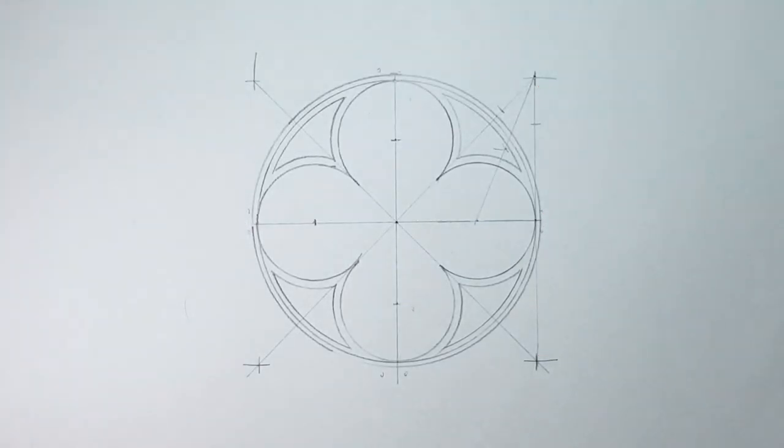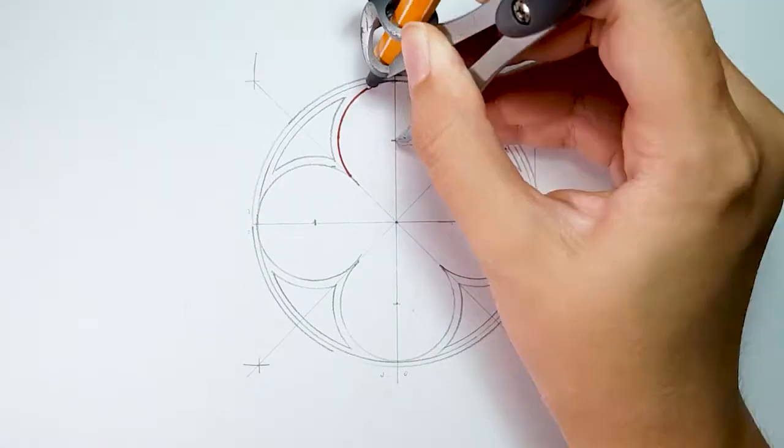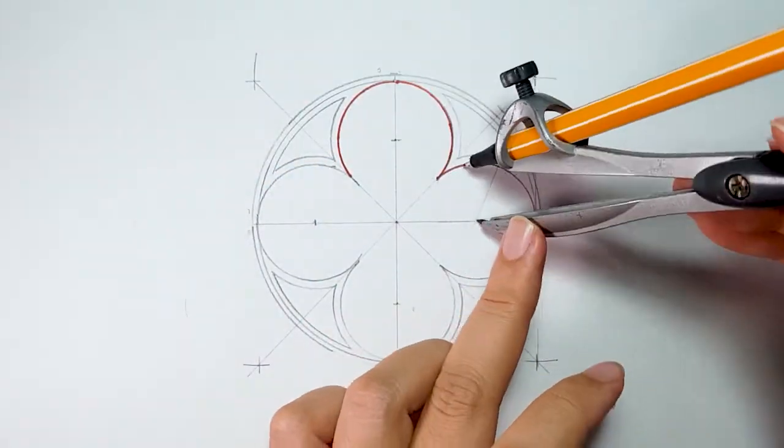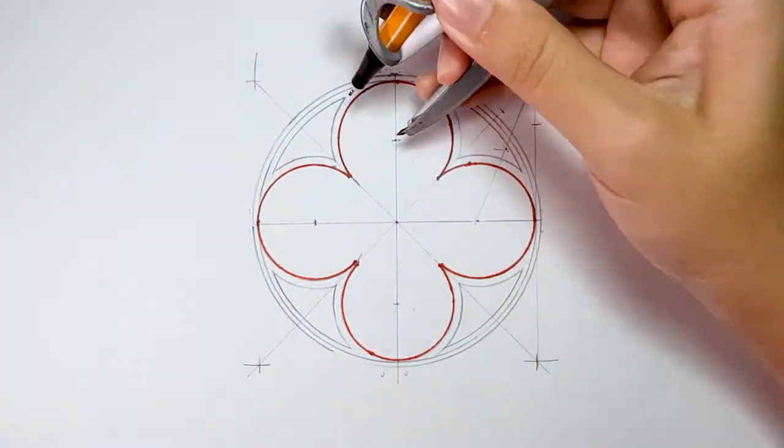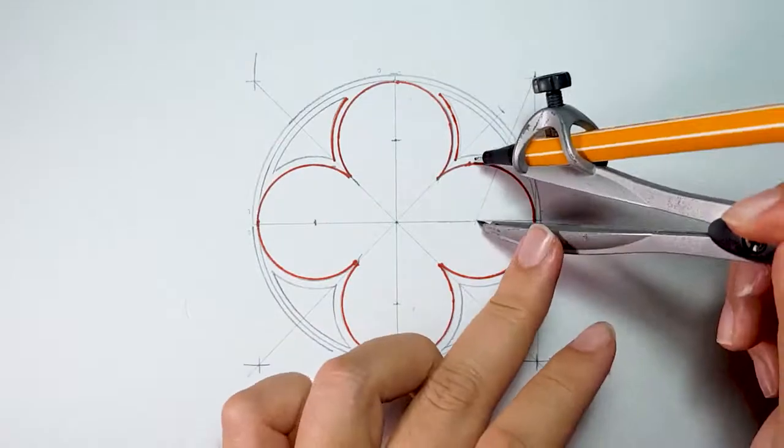The basic guideline of quatrefoil is finished. Now, use your pen with the compass to draw outlines based on the pencil drawing as shown in the video. Overlap areas are not being drawn.